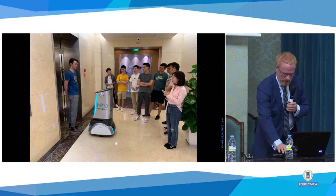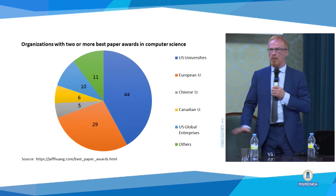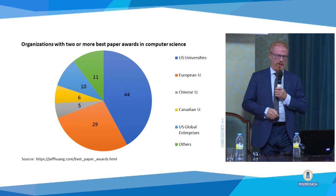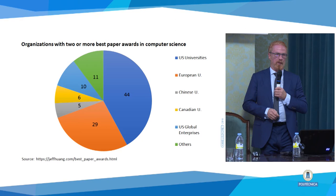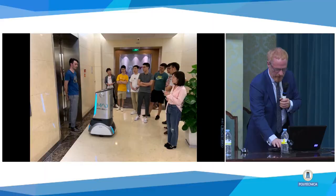We have to look at quality. If you look at organizations with best paper awards in computer science — and I checked in AI, it's exactly the same proportions — if you take organizations with two or more best paper awards, because one can be an accident, then US universities are clearly leading before European universities. Chinese universities have two in Hong Kong and four in mainland China. So best paper awards are still quite different.